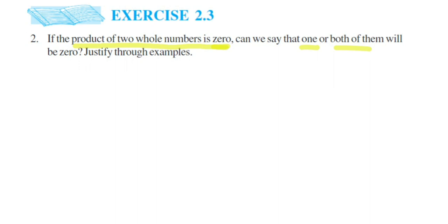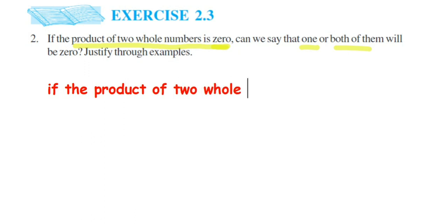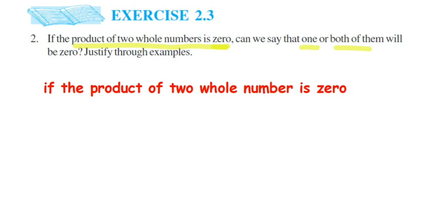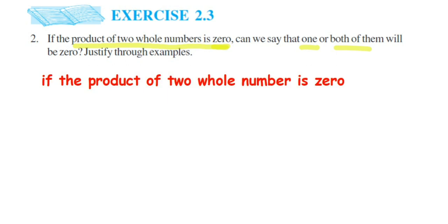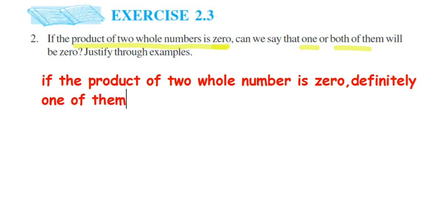Let us take the first statement: if the product of two whole numbers is zero and one of the two numbers is zero, then we can say definitely one of the numbers will be zero. If the product is zero and one number is zero, then definitely one of them is zero.